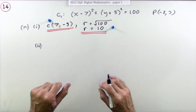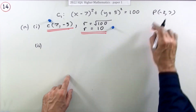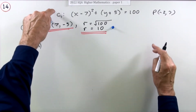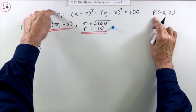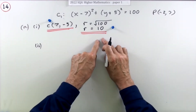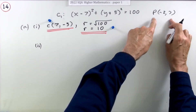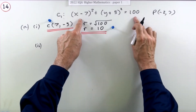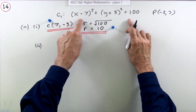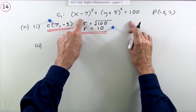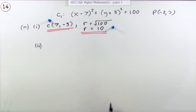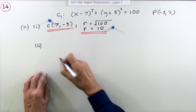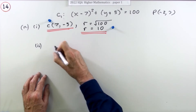The second part says show that point P(-2, 7) lies outside the circle — that's four marks. There are two ways you could do that: you could find the distance from C to P, and if it's more than 10 it's outside; or you could feed the point into the equation and compare to 100. They're essentially the same calculation, though maybe a bit more writing with the distance. I'll do the distance one first.